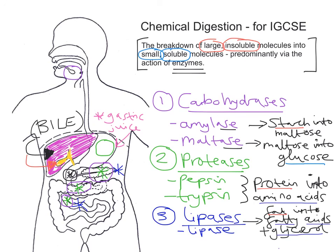Once these enzymes have acted, we have small soluble molecules that can pass through the villi. Glucose and amino acids pass through the villi and into the bloodstream. However, fatty acids and glycerol pass through the villi into what's known as the lacteal and then into the lymphatic system first, before eventually draining into the blood system.